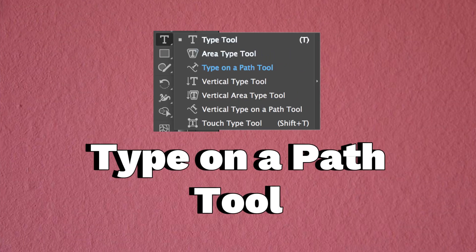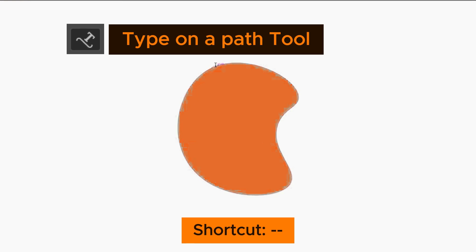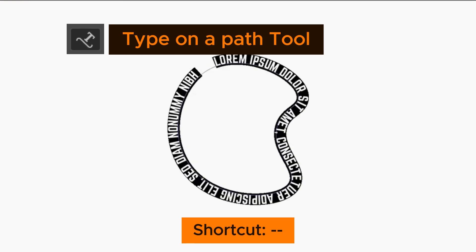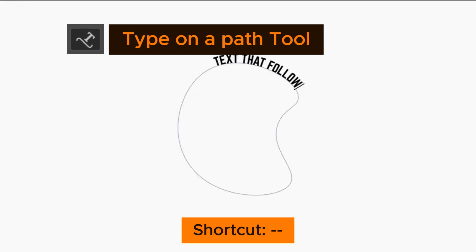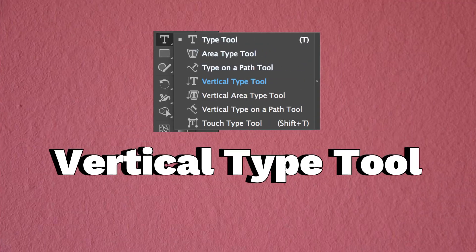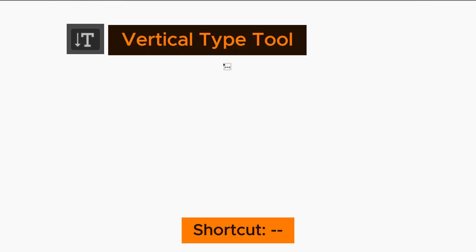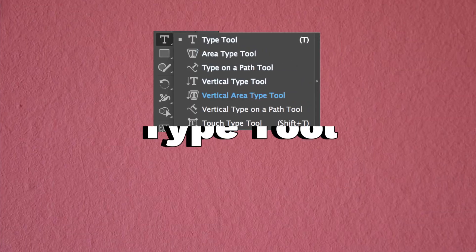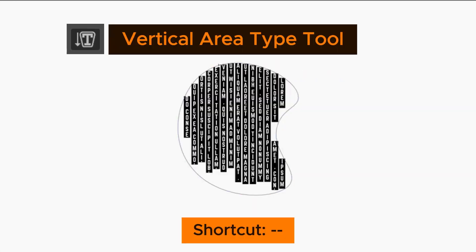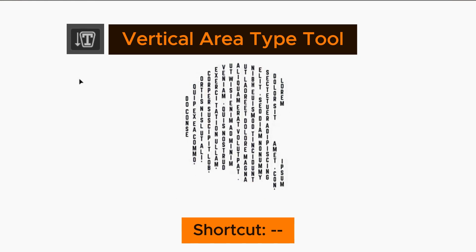The Type on a Path Tool has no default shortcut — click on a path to create text that follows the path. The Vertical Type Tool has no default shortcut — click anywhere to create vertical text. The Vertical Area Type Tool has no default shortcut — click on a path to create vertical text inside it.